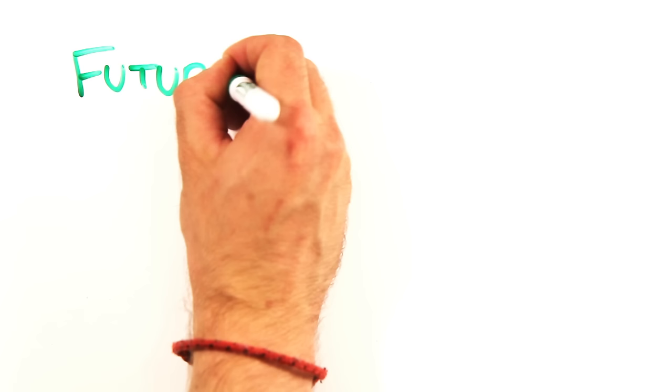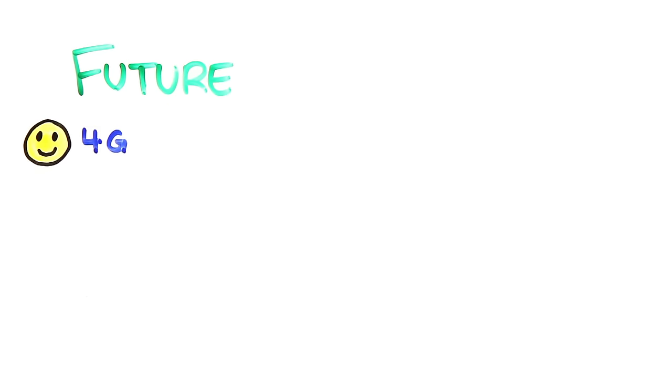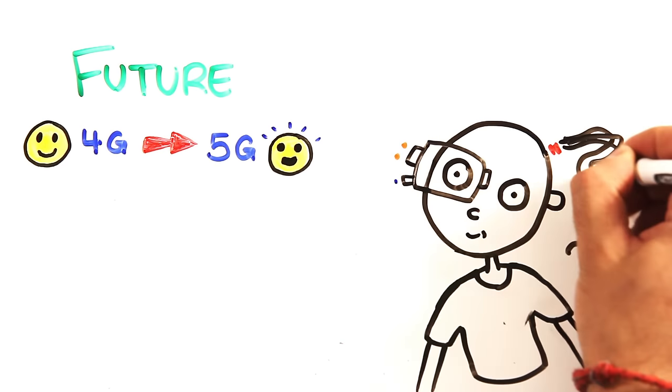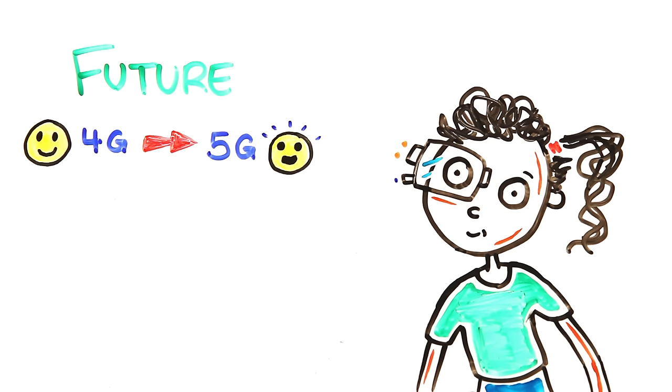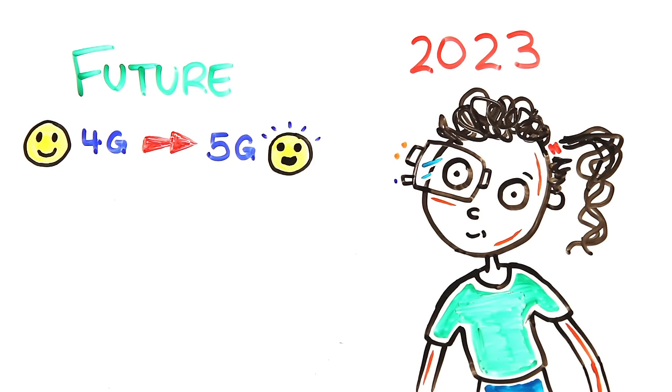So what does the future of messaging look like? We're currently in the fourth generation of mobile communication networks with 5G on the horizon. And it's actually been projected that the technology for phones embedded in our bodies can be available as soon as 2023.